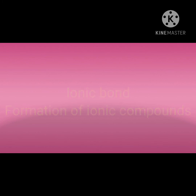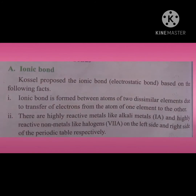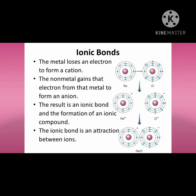What is ionic bond? Kossel proposed the ionic bond based on certain factors. An ionic bond is formed between atoms of two dissimilar elements due to the transfer of electrons from one atom of one element to another. The positive ions are called cations and negative ions are called anions. These cations and anions are formed due to the transfer of electrons from metal atoms to non-metal atoms, which then experience electrostatic forces and get attracted to form a chemical bond.